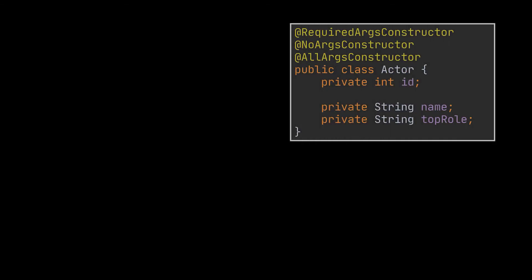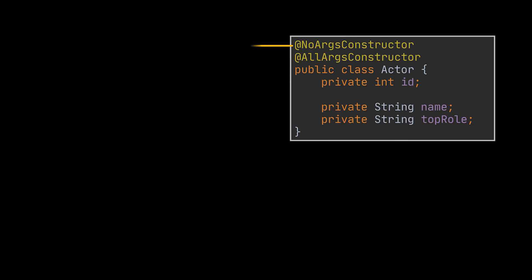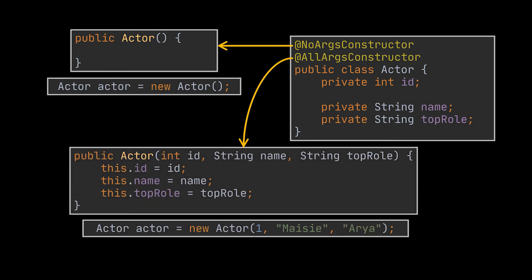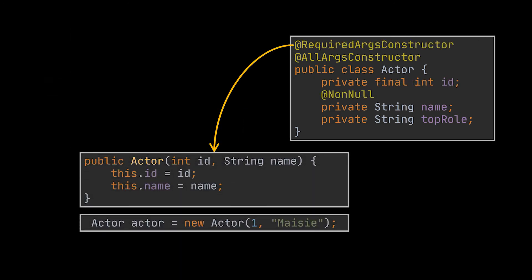Let's tackle constructors. Lombok offers three different constructor annotations: @NoArgsConstructor, @AllArgsConstructor, and @RequiredArgsConstructor. The @NoArgsConstructor generates a default empty constructor. The @AllArgsConstructor generates a constructor that takes all the fields as arguments — in our case id, name, and topRole, or none of them. The @RequiredArgsConstructor considers final variables and variables marked with @NonNull to be required, so those become the arguments of the generated constructor.